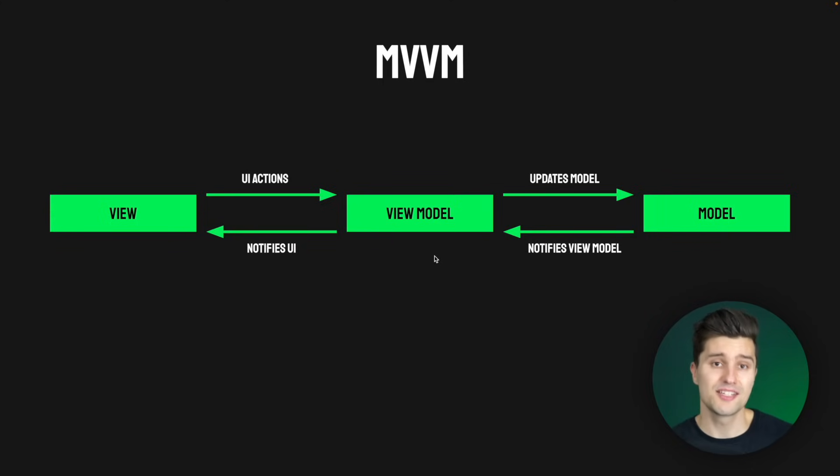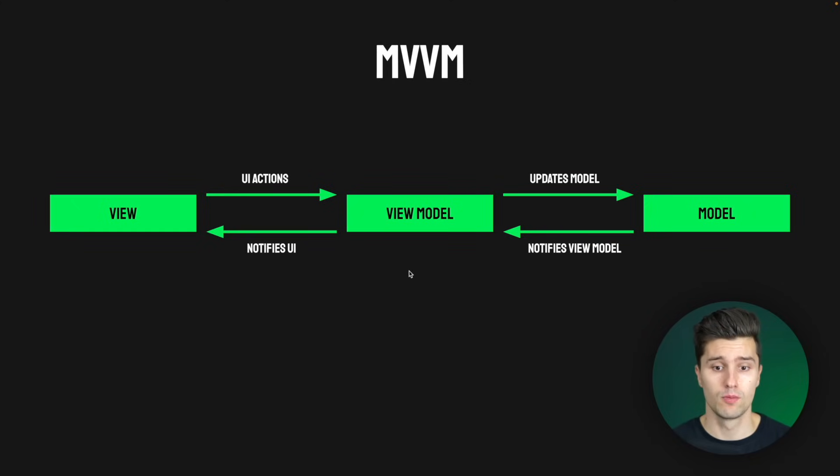The ViewModel's job is to take the raw data from the Model — for example your list of contacts — and bring it into a format that's easy to display on the UI. Very often we save data in a format we don't want to use exactly as-is on the UI. For example, you might have a Unix timestamp representing a date, which is just a long number, easy to save in a database. But if you showed that to a user they wouldn't be able to read it. So the ViewModel takes that contact with the Unix timestamp and converts it to a readable date format, then automatically notifies the UI that there is a change — a new contact in the list.